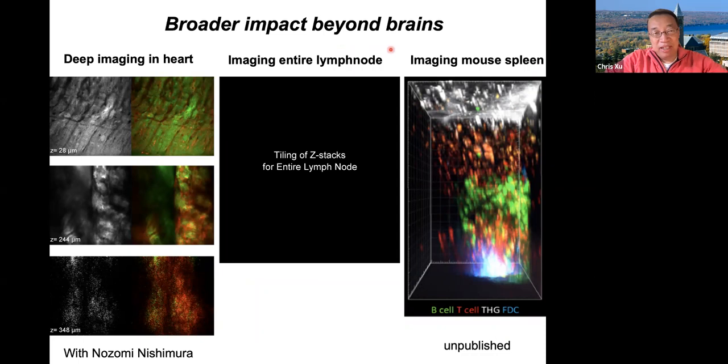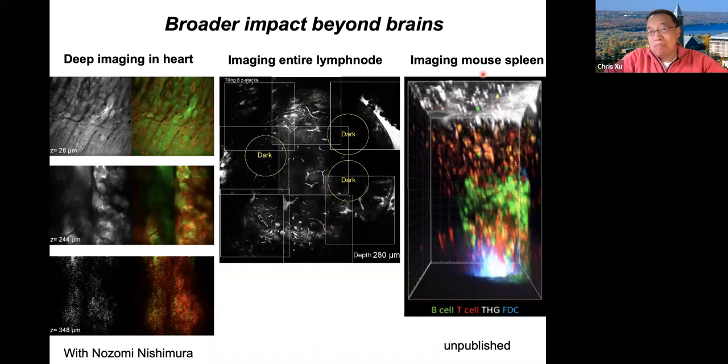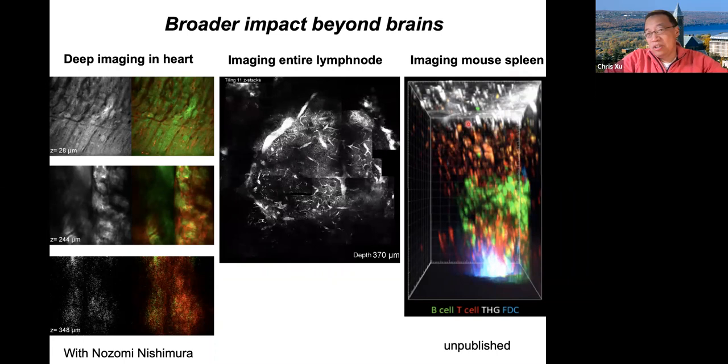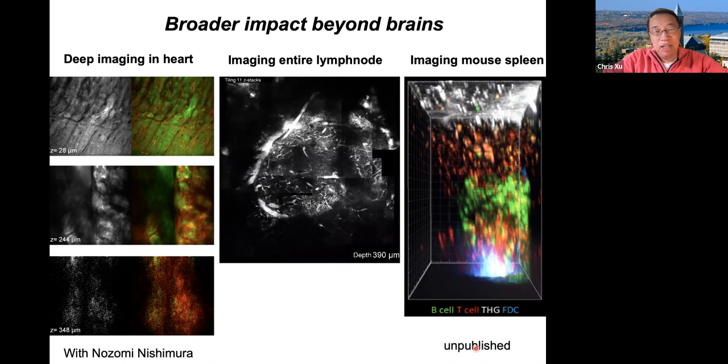We can also have broader impact beyond the brain. For example, we can image deep into the heart — work done together with Nozomi Nishimura at Cornell. We can image the entire lymph node, potentially playing a big role in immunology. We can image mouse spleen — a very difficult organ to image deeply with two-photon. It's almost impossible to image even beyond a couple hundred microns into the spleen, but we can image about 500 microns deep. These results are not yet published, but they show the promise of potential impact in areas beyond the brain.